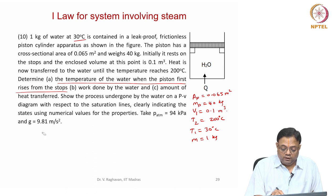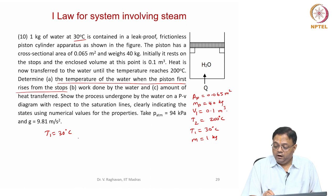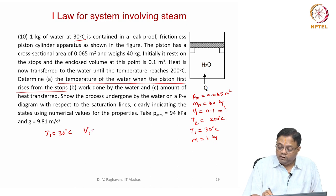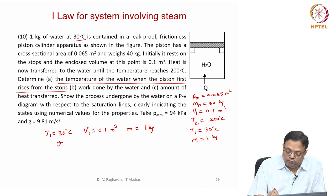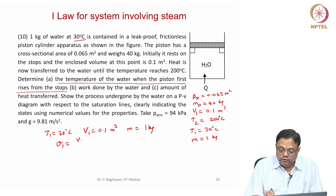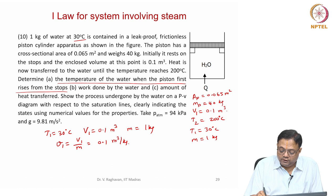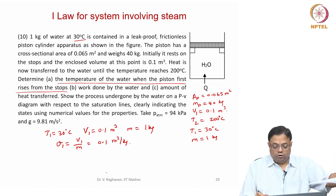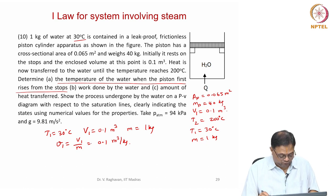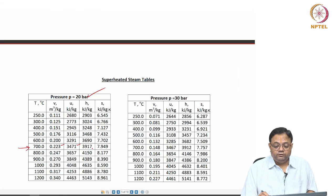The initial conditions are: T1 = 30°C, V1 = 0.1 cubic meters, m = 1 kg. From this I can find specific volume v1 = V1/m = 0.1 cubic meters per kg. So now we have two values, T and v, and from that we will try to fix the state.